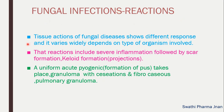Fungal infections and their tissue reactions show different responses and vary widely depending on the type of organism involved. Depending on which fungi are involved, different reactions can be observed in the patient. These reactions include severe inflammation followed by scar formation and keloid formation — projections on the skin or subcutaneous layer. Also observed are acute pus formation, granuloma with caseation, and fibrocaseous pulmonary granuloma.